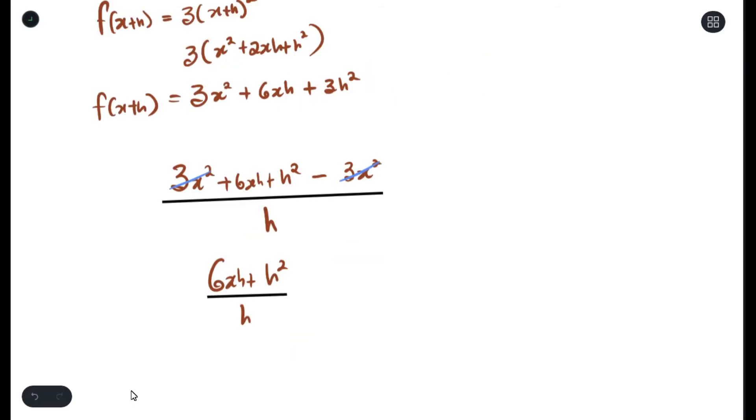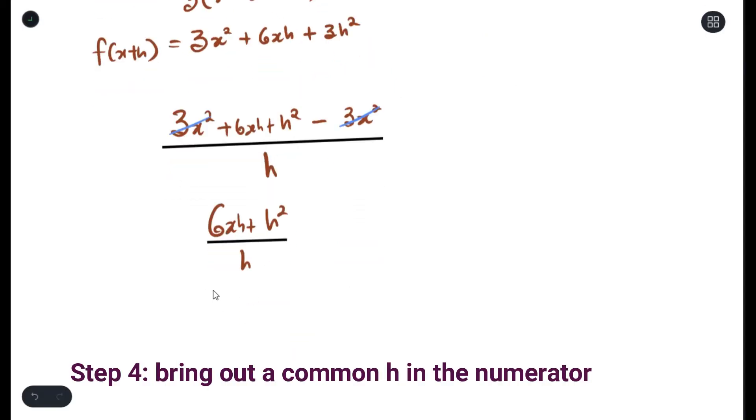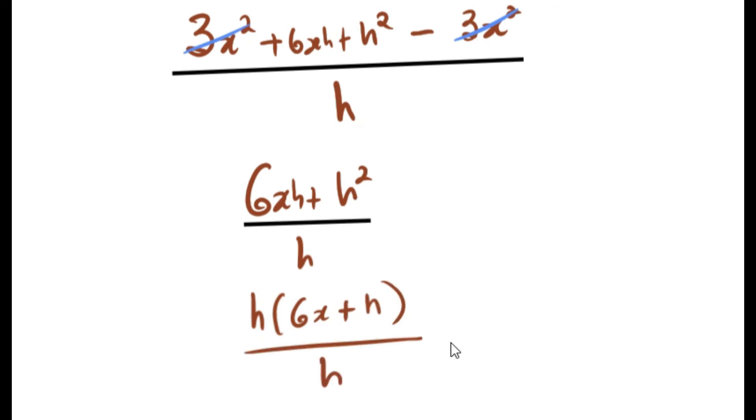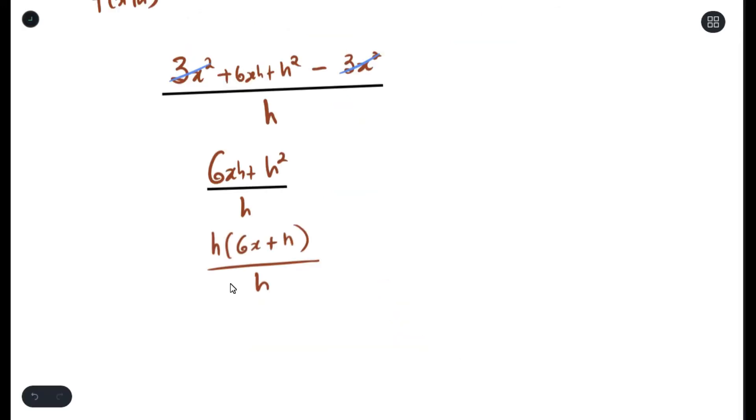Now the next step is to bring out the common factor of h. This leads into the next step by dividing the h's.